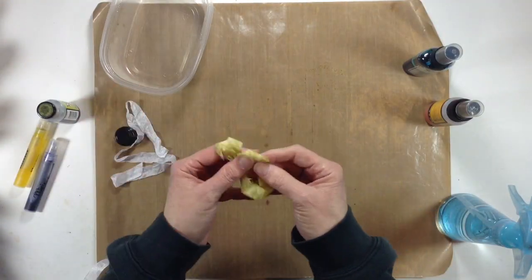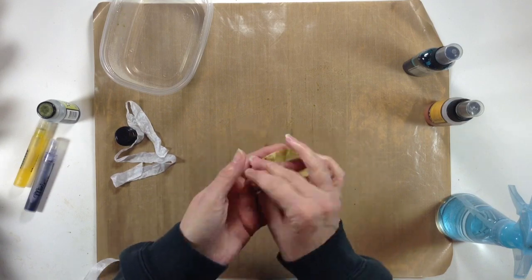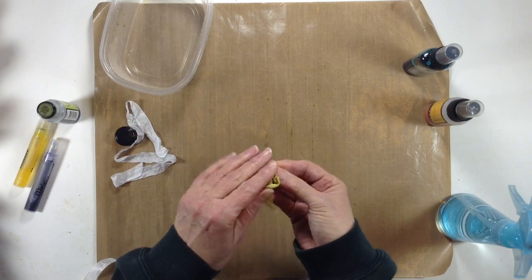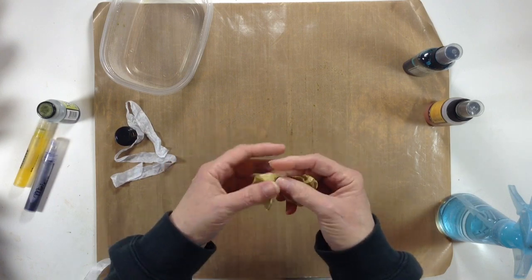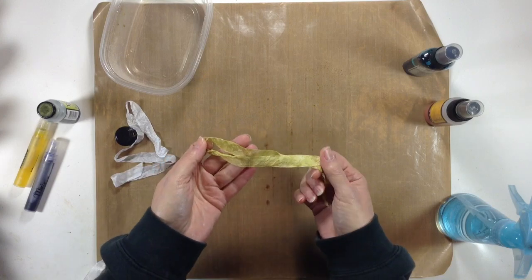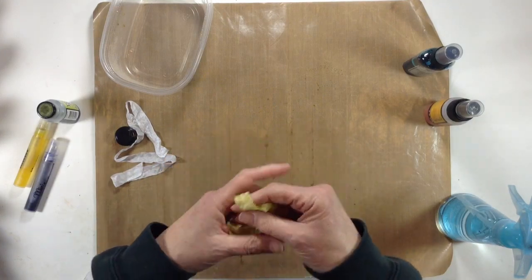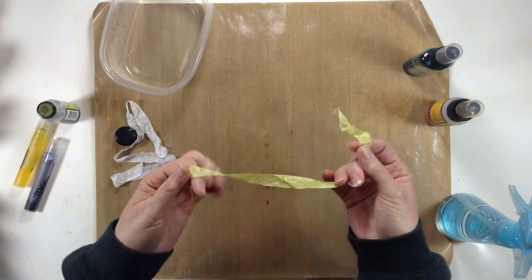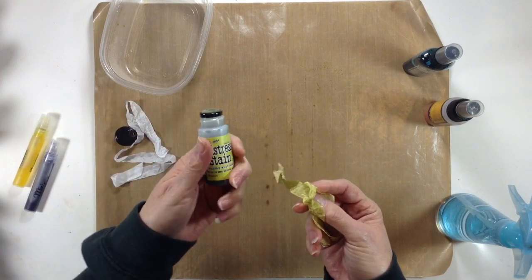So there you have that's the Shabby Shutters seam binding. You can scrunch it up while you're drying it and that'll make it more crinkly. If you want a little darker color, you can go ahead and ink it again or apply more ink, whatever depth of color you want to use. That's using the Distress Stain.